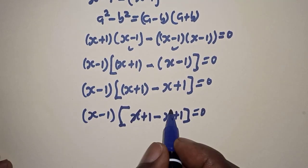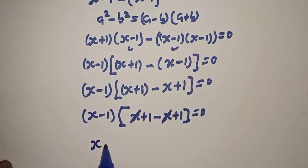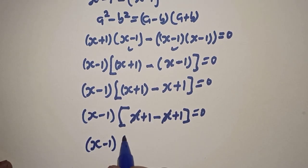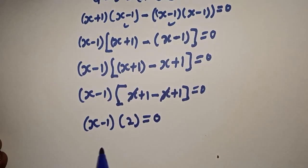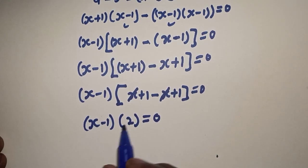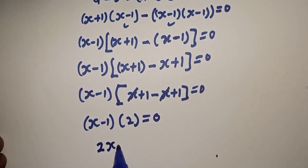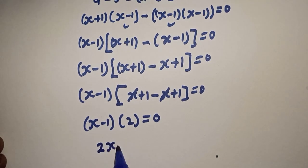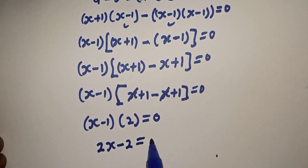This one will cancel this, s minus 1 bracket 1 plus 1, that is 2, is equal to 0. And let's open this bracket again, s times 2, 2s, minus 1 times 2, minus 2, is equal to 0.